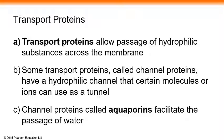Some transport proteins, called channel proteins, have a hydrophilic channel that certain molecules or ions can use as a tunnel. The channel protein called aquaporin facilitates the passage of water. Water is a polar molecule; however, water molecules are small enough to pass through the membrane almost freely. But sometimes cells need to transport water on a large scale, and then they can use the special transport protein named aquaporin.